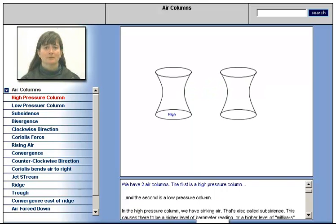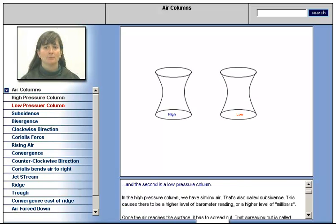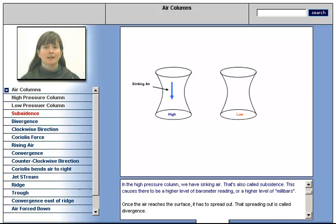We have two air columns. The first is a high pressure column, and the second is a low pressure column. In the high pressure column, we have sinking air. That's also called subsidence. This causes the air to be a higher level of barometer reading, or higher level of millibars.